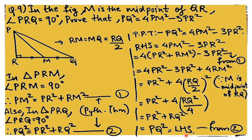An important note: if you're writing the proof and realize mid-way that you need to cite the Pythagoras theorem application, mention it wherever you are — write 'in this triangle, PR² + RQ² = PQ² by Pythagoras' theorem' and then conclude RHS = LHS. It doesn't always have to be set up at the beginning; you can mention the equation wherever it appears.